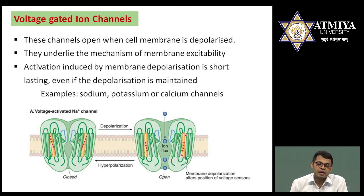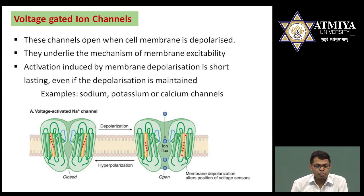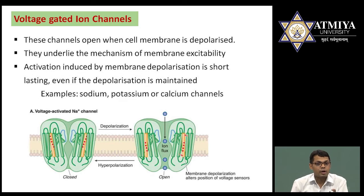The second type of gated ion channel is the voltage-gated ion channel. As the name suggests, these are dependent on voltage and are mainly related to neurons. When voltage is generated, depolarization occurs, and these channels open. Examples include the sodium ion channel, potassium ion channel, and sodium-potassium pump. The mechanism is the same as described for ligand-gated channels, except here ligand binding is not involved — these respond to a particular level of voltage.